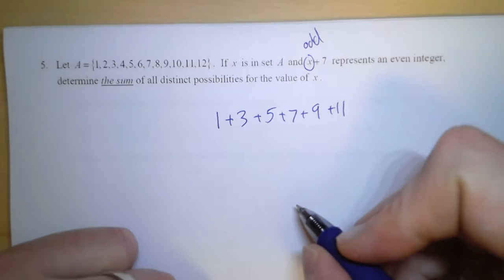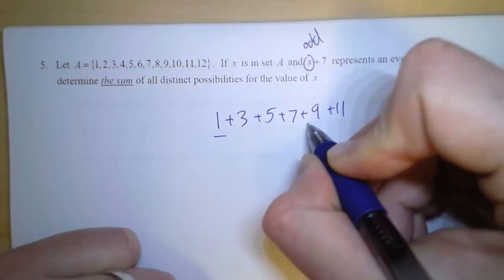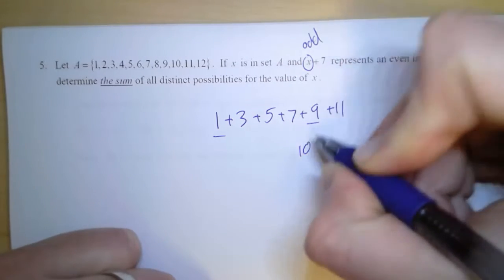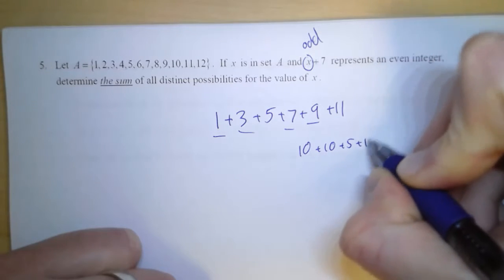All right, so now the easy way is just to group these. So 1 and 9 is 10, 3 and 7 is 10, plus 5 plus 11.